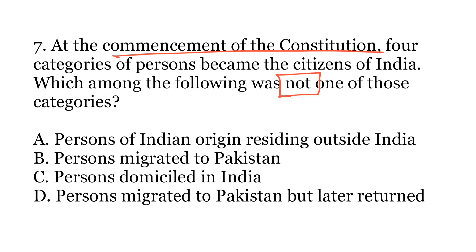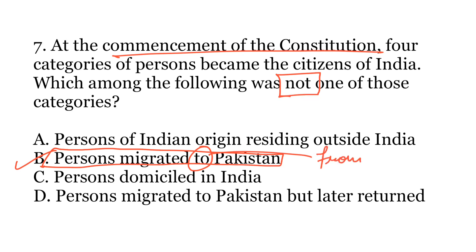The correct option is B. Persons who migrated to Pakistan. This can be solved with common sense — those persons who migrated to Pakistan would not be granted Indian citizenship. The correct phrasing should be 'from' Pakistan, not 'to' Pakistan. Persons who migrated from Pakistan became citizens of India, while those who migrated to Pakistan did not. All other three categories are correct — these were the four categories who became citizens of India at the commencement of the constitution.